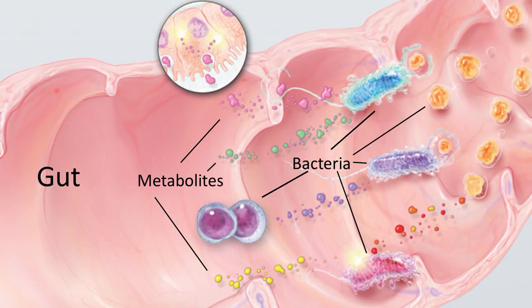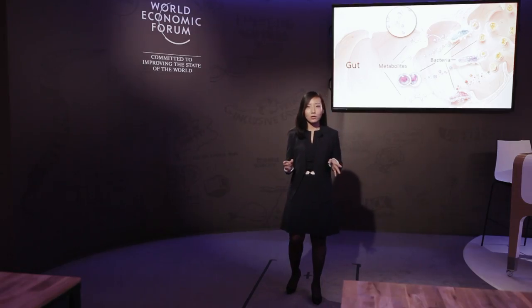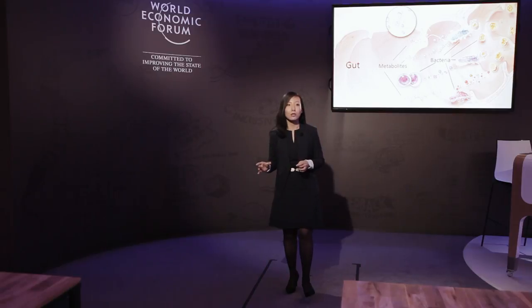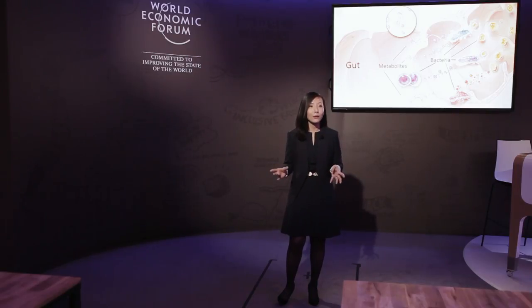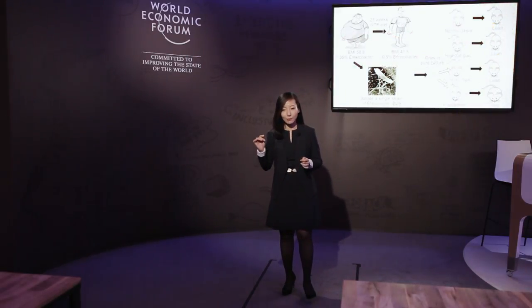The gut bacteria can produce a lot of essential functions for the human host. Gut bacteria grow by using undigested or non-digestible compounds from our diet as nutrients, and they can also grow using mucin and sloughed cells from our intestinal tract. When they grow, the gut microbiota produce many kinds of bioactive compounds — some are beneficial, while others may be toxic or detrimental. These bioactive compounds can enter our bloodstream and impact the host's immunity and metabolism.